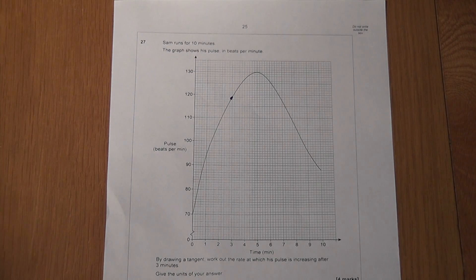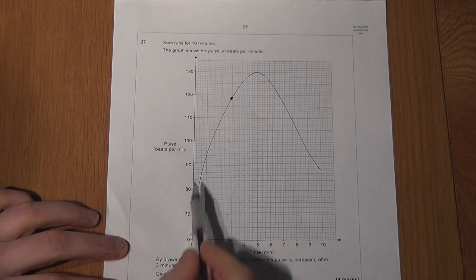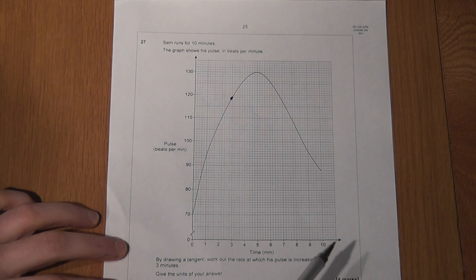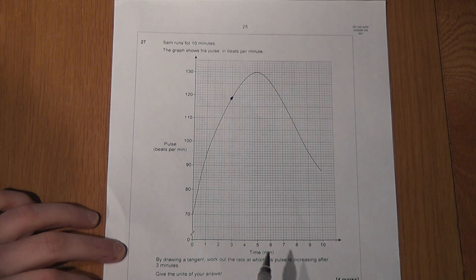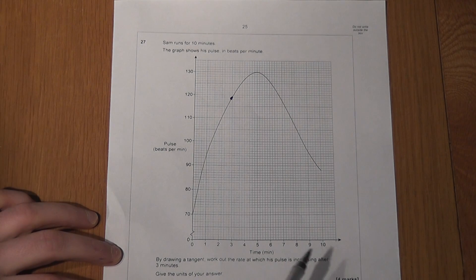This concise video looks at finding a rate of change when the graph is a curve. And this graph shows Sam's pulse during a race.